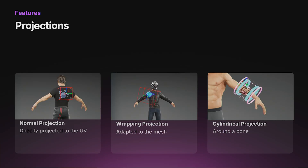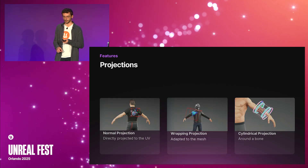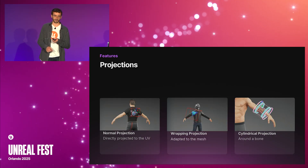Mutable not only supports linear projections, but also wrapping projections, which are useful when the projection surfaces are non-planar, and cylindrical projections.